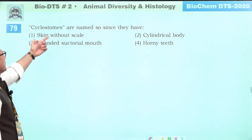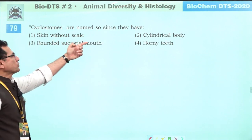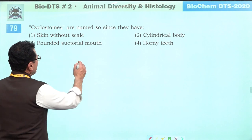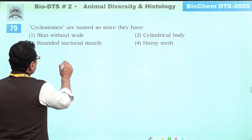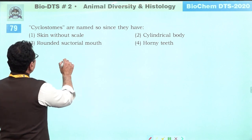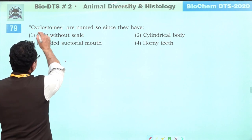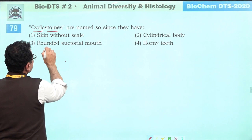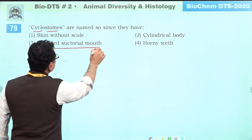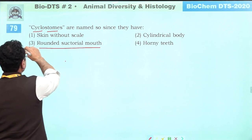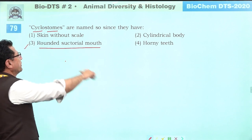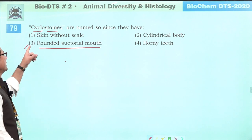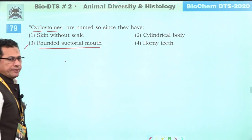Cyclostomes are named so because 'cyclo' means rounded and 'stoma' means mouth. They are animals with a rounded suctorial mouth. This is the correct description. Answer is three.